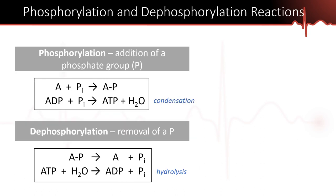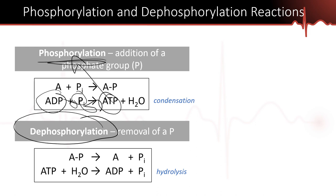Another common reaction type is phosphorylation and dephosphorylation. Phosphorylation means a phosphate is added to a molecule — for example, adding a phosphate to ADP to make ATP. Dephosphorylation is the opposite: stripping a phosphate from ATP to make ADP and inorganic phosphate. You'll see many examples of both throughout the semester.